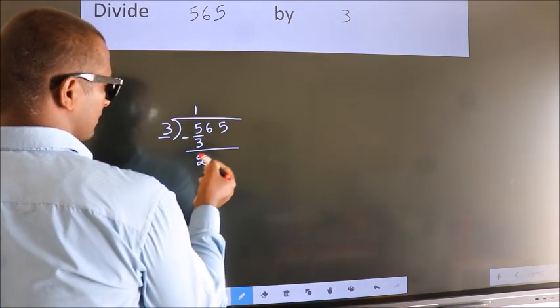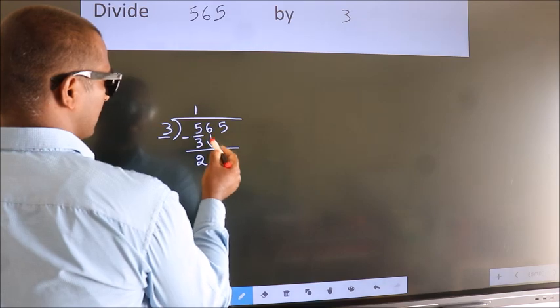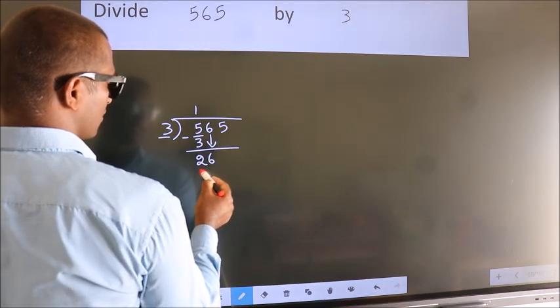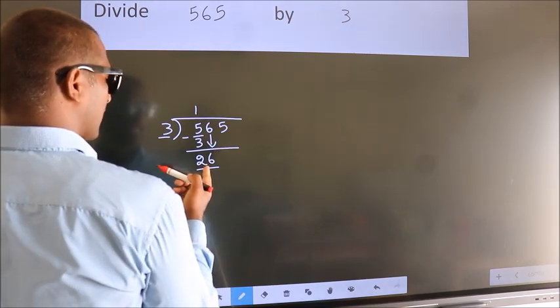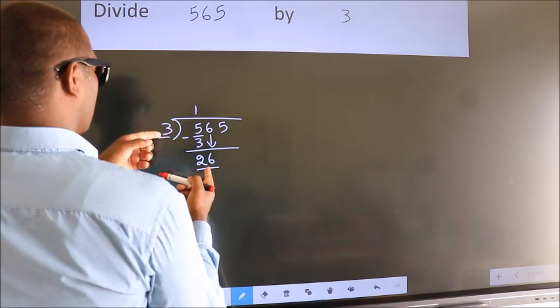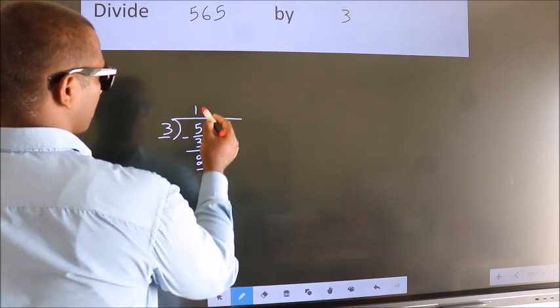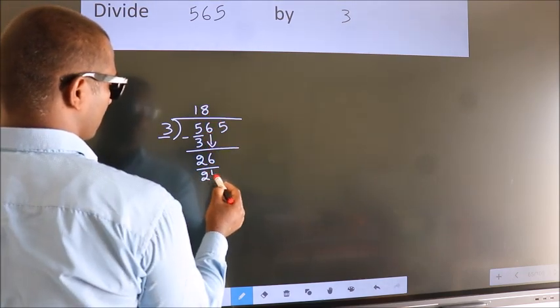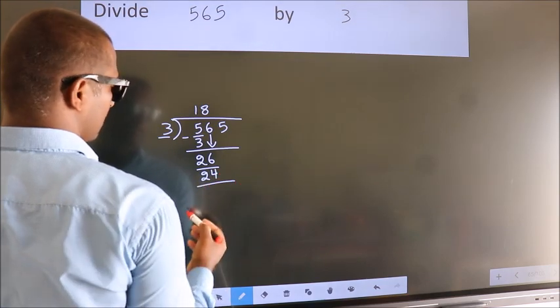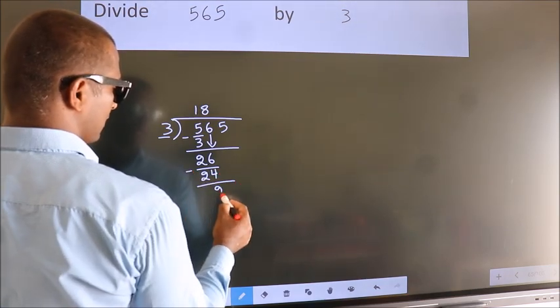After this, bring down the next number, so 6 down, making 26. A number close to 26 in the 3 table is 3 times 8 equals 24. Now we subtract, we get 2.